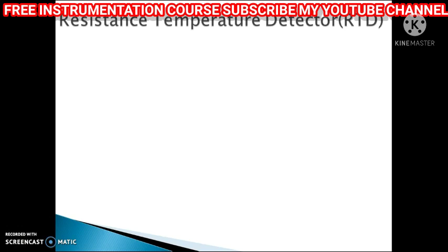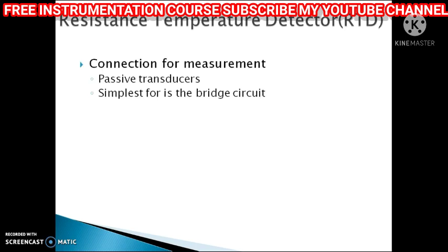To understand how to use the RTD in actual sensing, we need to know the basic circuit to measure its value. RTD is a passive transducer, so to measure the change in resistance with respect to temperature we require a bridge circuit to measure the change in temperature.